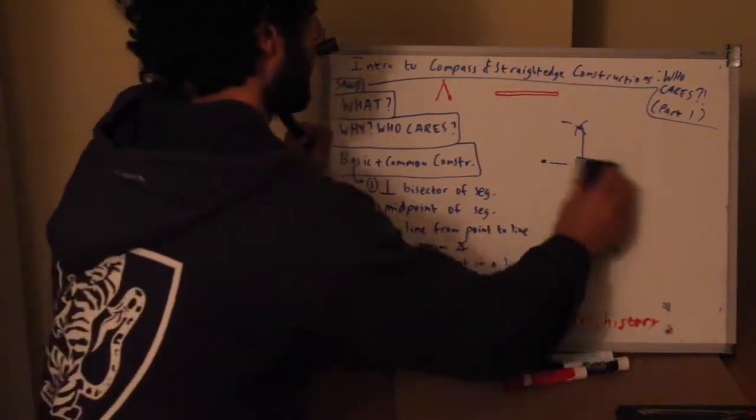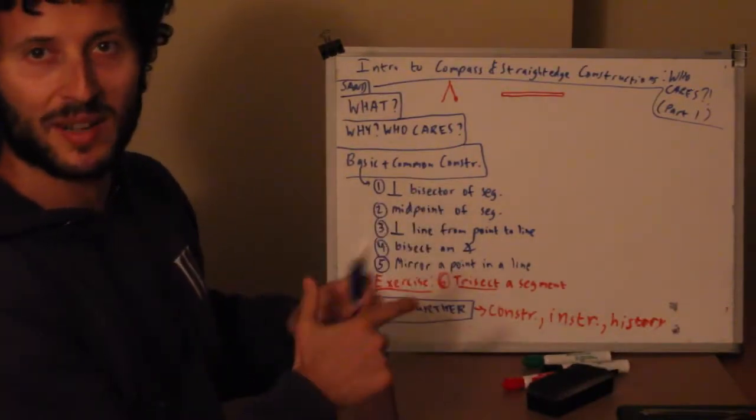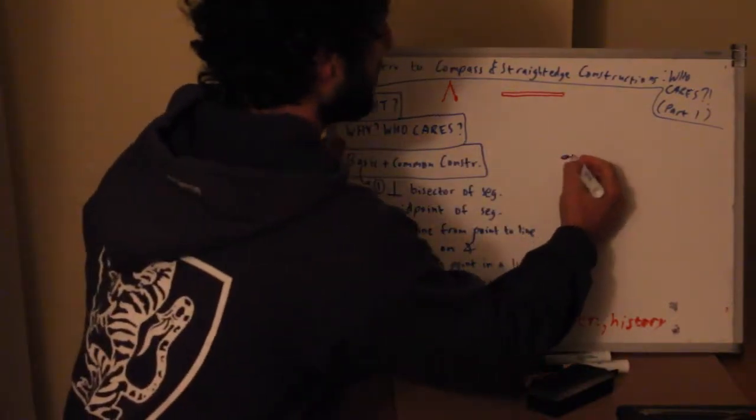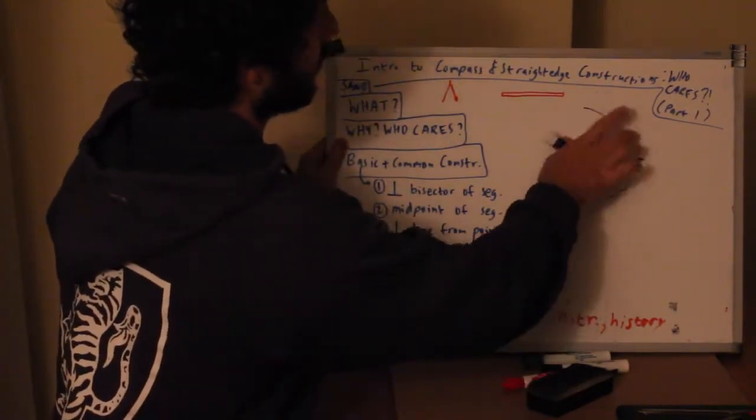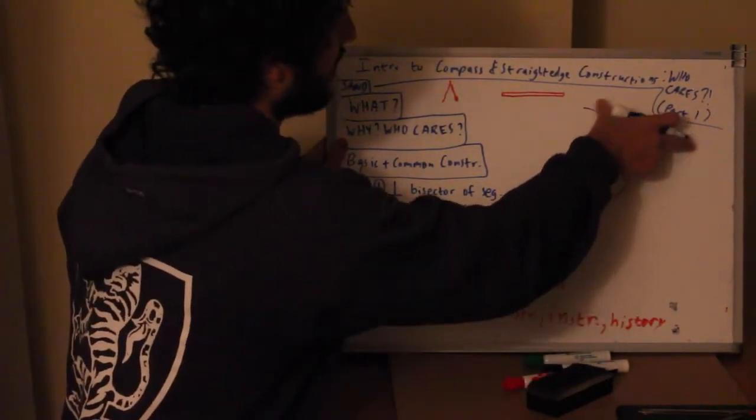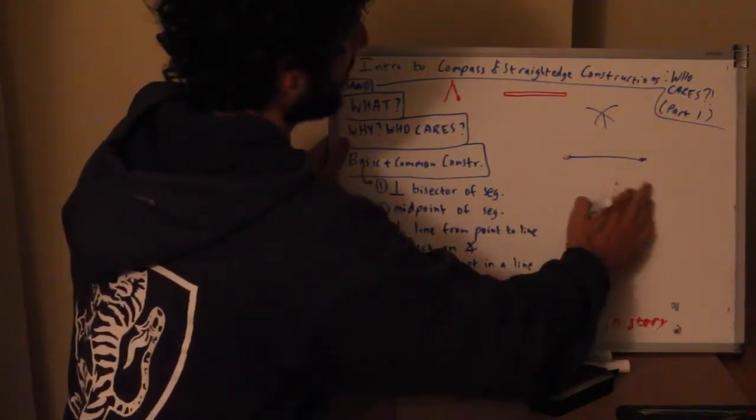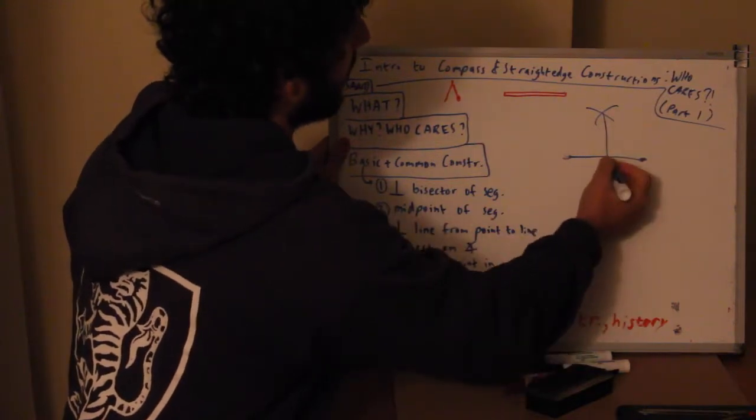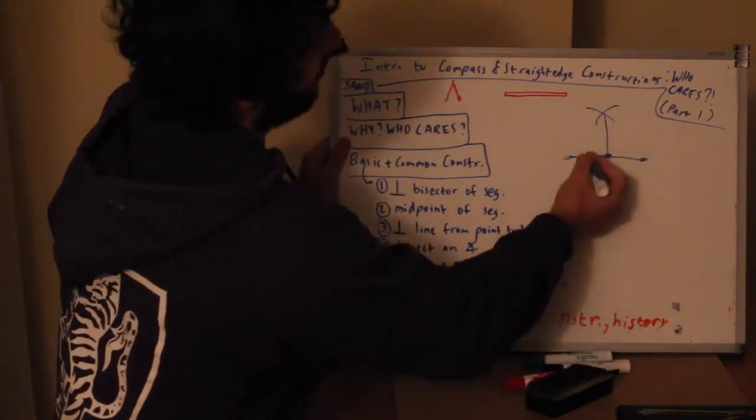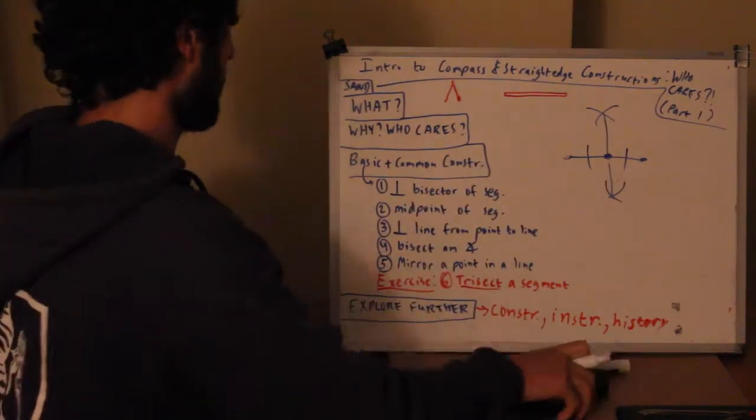Number two: how do we find the midpoint? Actually we already did that for number one, so I'll just redo it. You do these arcs from this one, and when you connect these, that point splits this into two equal parts. There we've created a midpoint.